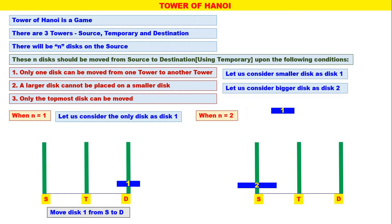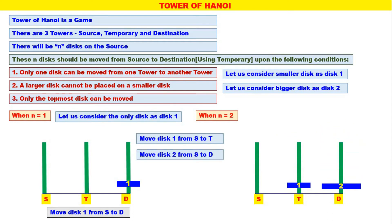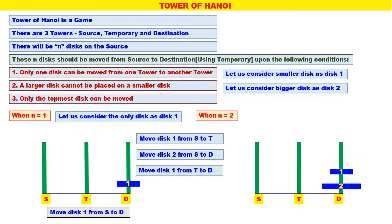Disk number 1 is moved from Source to Temporary. Next, disk number 2 is moved from Source to Destination. Next, disk number 1 is moved from Temporary to Destination. We have moved disks 1 and 2 which were on the Source to the Destination — three moves in total.